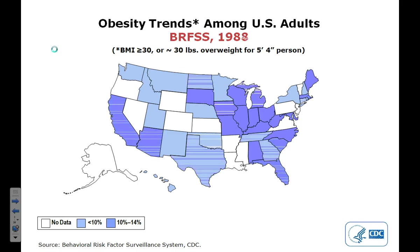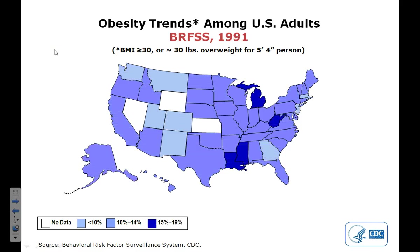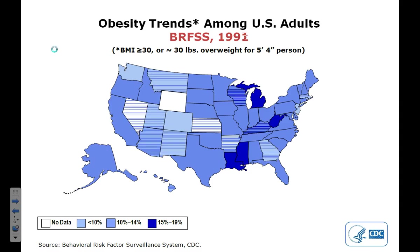The first couple of years, you can see that more and more states are joining the data collection process. Then in 1991, Michigan, West Virginia, Mississippi, and Louisiana add a new category — this darker blue color — where 15 to 19% of the total population in these four states is now obese.